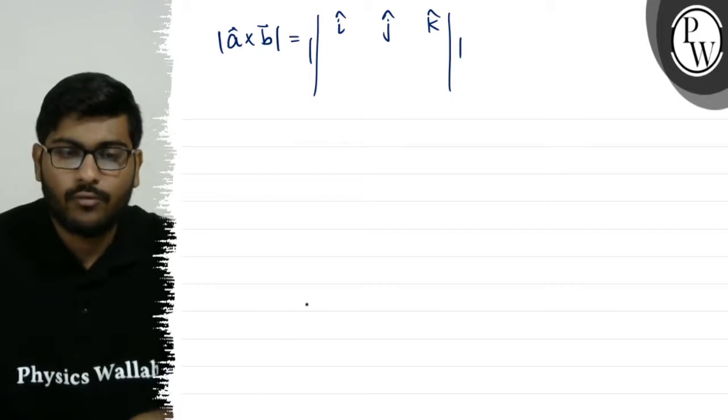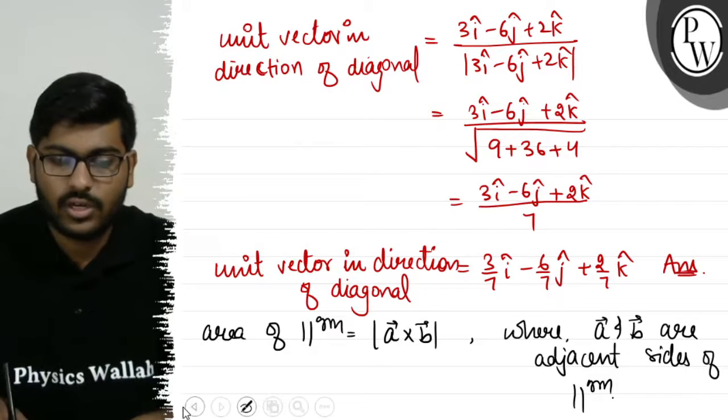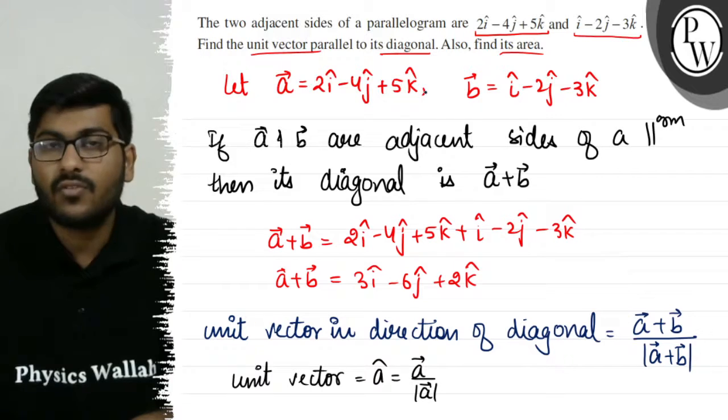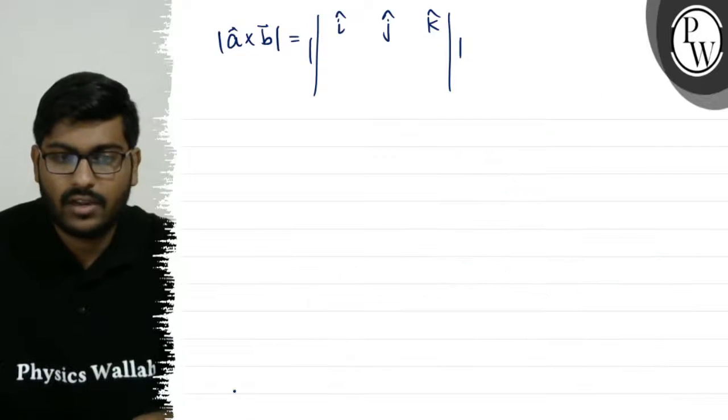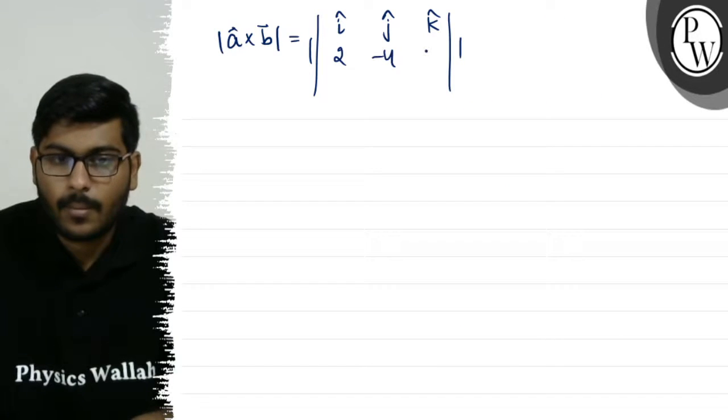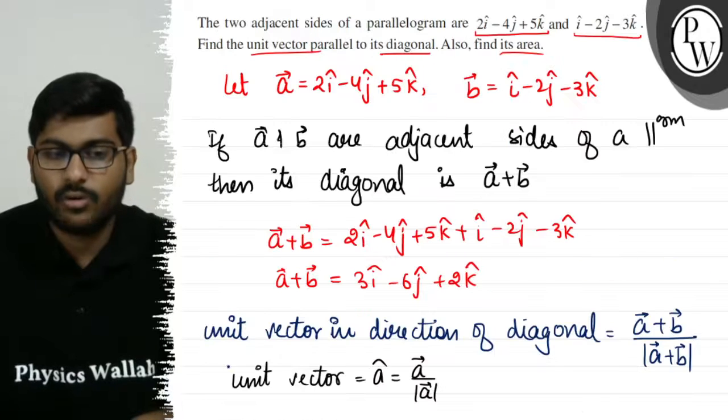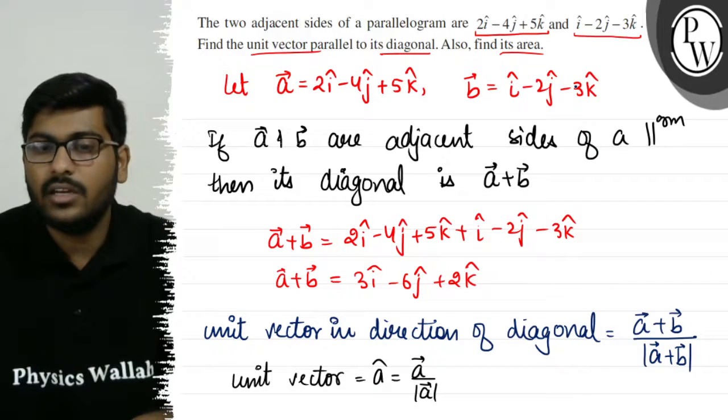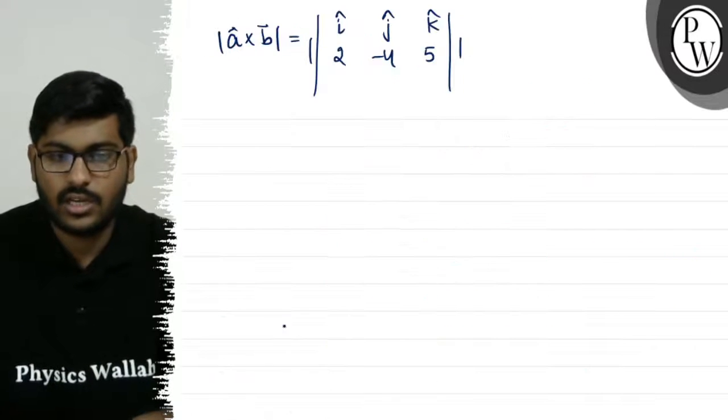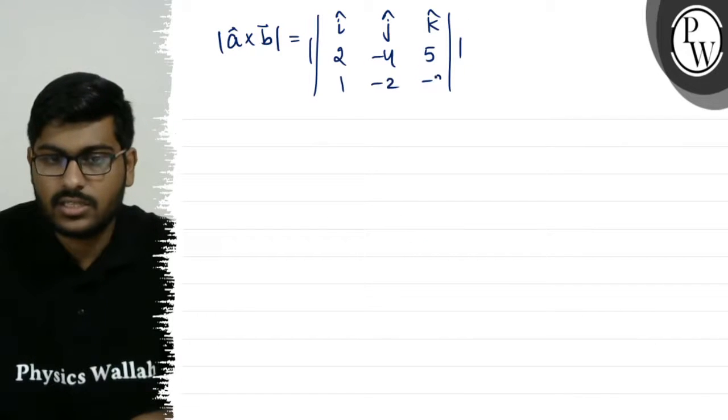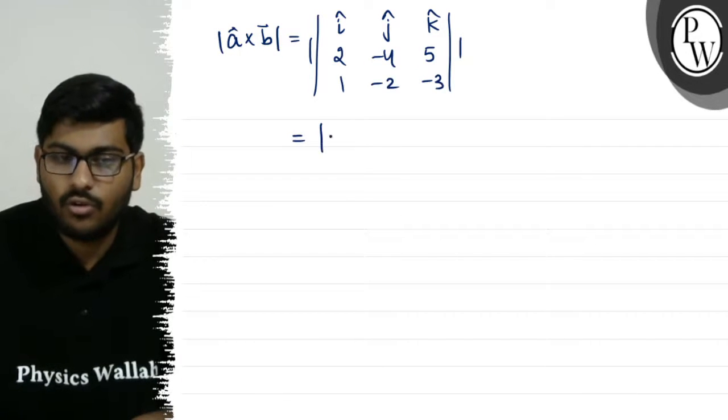A vector cross B vector equals the determinant of i-cap, j-cap, k-cap. A vector components are 2, minus 4, 5, and B vector components are 1, minus 2, minus 3. We need to find the modulus of this determinant.